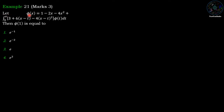Example: Let phi(x) = 1 - 2x - 4x² + integration from 0 to x of (3 + 6(x-t) - 4(x-t)²) phi(t) dt. Then phi(1) is equal to — we have four options: e^(-1), e^(-2), e, and e².